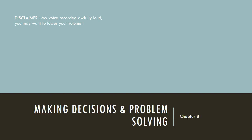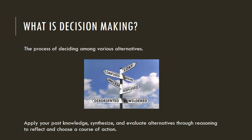So to start off, what is decision making? Well, it's the process of deciding among various alternatives, whether you're trying to decide between what car to get, an apartment, or even what you want to have for dinner. There are multiple options and you need to choose. In order to choose, you're going to want to apply your past knowledge, synthesize and evaluate alternatives through reasoning to reflect on a course of action.